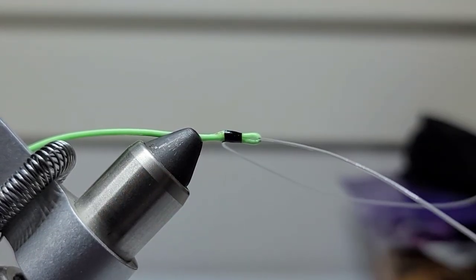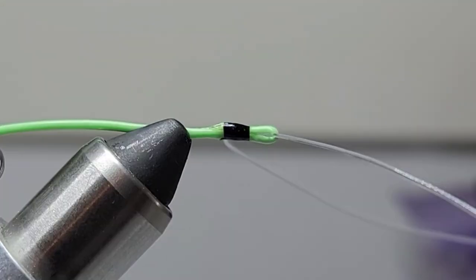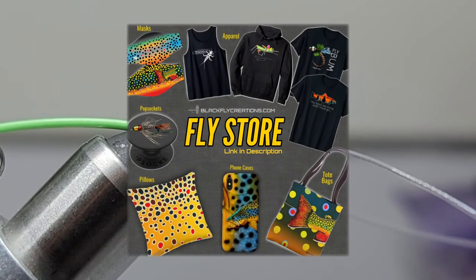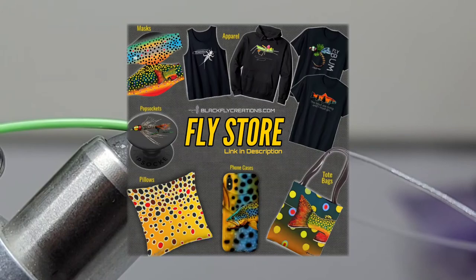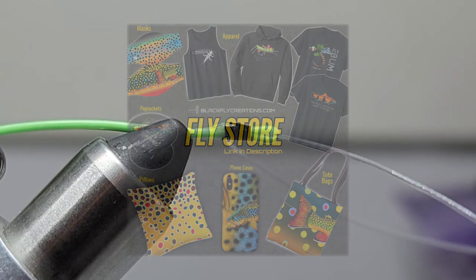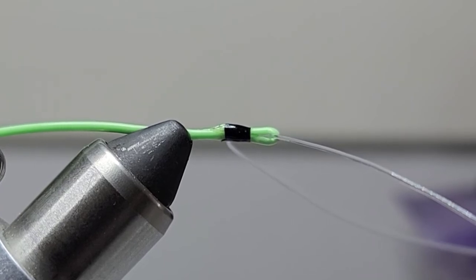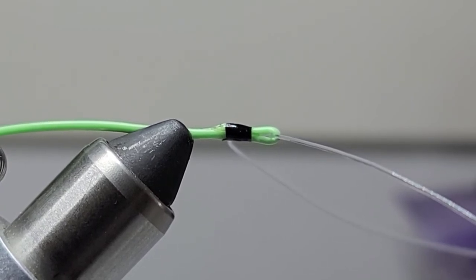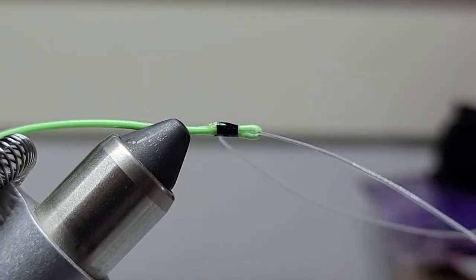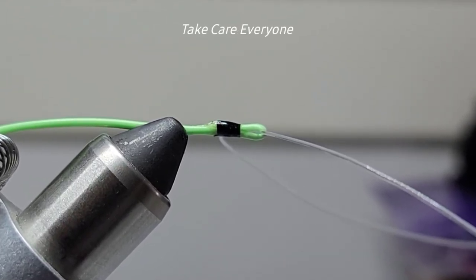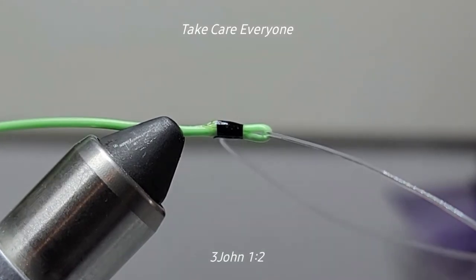But anyways guys, that's just a short little video on how I like to tie my floating lines for my dry fly fishing. I know there's different ways for the euro lines and stuff. You can strip all of the coating off, but I hope you guys enjoyed this little video. I hope it helps you guys. If it did, I'd appreciate if you liked the video and possibly consider subscribing. Thank you guys for watching. This is Steve from Blackfly Signing, and I will see you guys on the next episode.